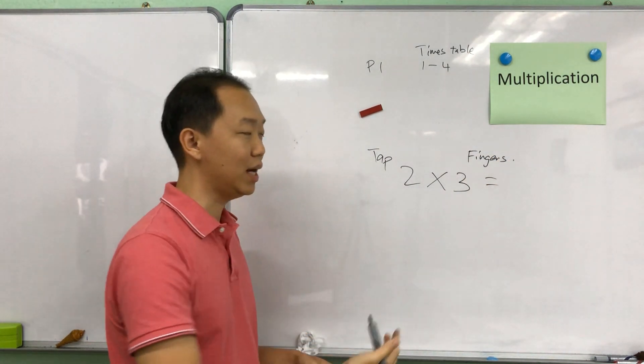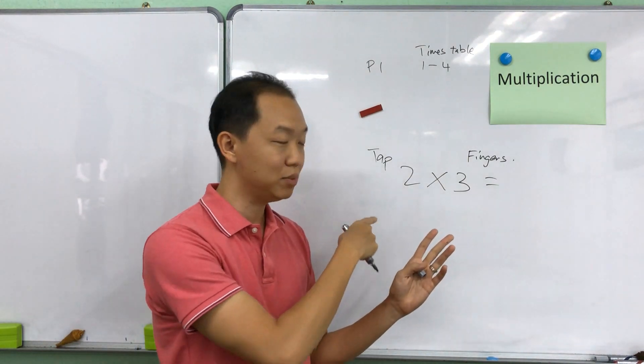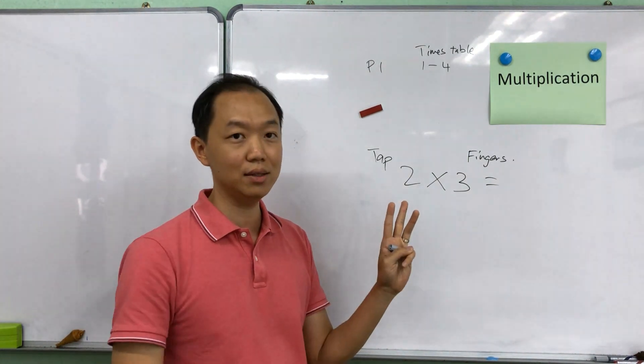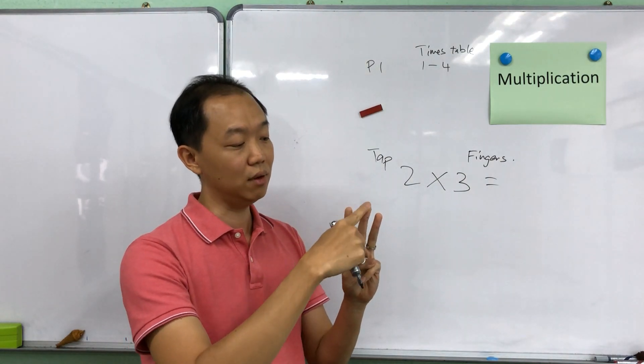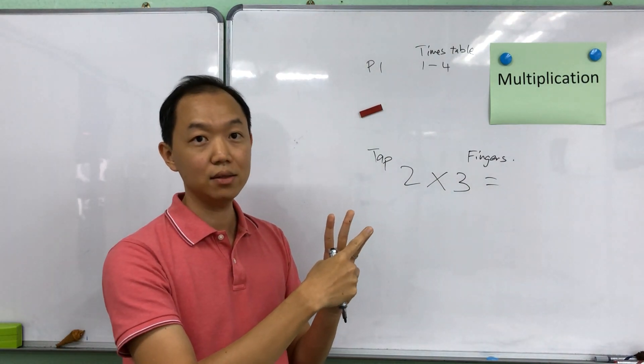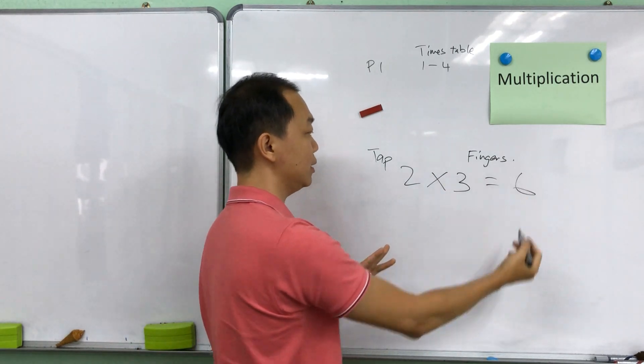And then you count. So for example over here tap 2 times on 3 fingers. On the left hand just have 3 fingers over here. And then tap 2 times. So it's 1, 2, 3, 4, 5, 6. So the answer will be equal to 6.